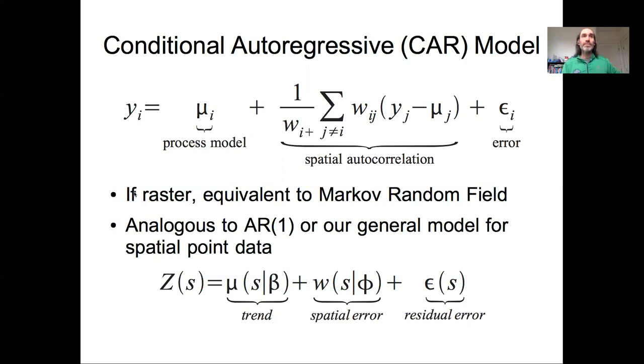It's worth noting that if your data is a perfect raster, a perfectly square grid data, which would happen a lot with things like remotely sensed data where you get image raster data, this is essentially equivalent to the Markov random field model where we had a process model that involved a component of weighting what's going on at your neighbors, and it's also directly analogous to this AR1 and this spatial point data.